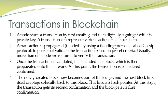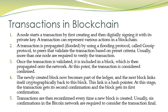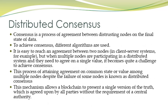In Bitcoin technology there are six types of confirmation. The number of confirmations required depends on the design of the blockchain. Transactions are reconfirmed every time a new block is created, and usually six confirmations in the Bitcoin network are required to consider a transaction final.